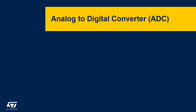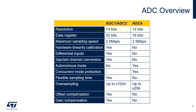STM32U5 products integrate three ADCs: the 14-bit ADC1-ADC2 and the 12-bit ADC4. ADC1 and ADC2 are high-performance converters belonging to the CPU domain, while ADC4 is a low-power converter belonging to the smart-run domain. The resolution of ADC1 and ADC2 is 14-bits with data stored in 32-bit registers, while ADC4 is 12-bits with data in 16-bit registers. The maximum sampling rate is the same for both ADCs: 2.5 megasamples per second.